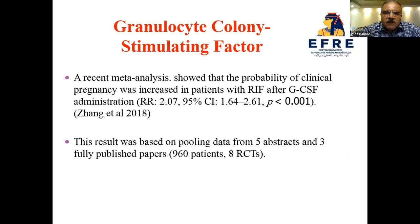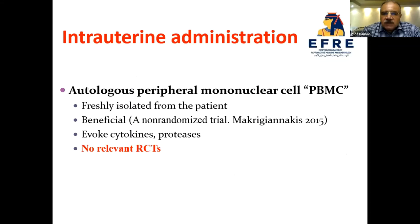Regarding granulocyte colony-stimulating factor (G-CSF), a recent meta-analysis showed that the probability of clinical pregnancy was increased in RIF patients after its administration, based on pooling data from five abstracts and three fully published papers. Regarding intrauterine administration of autologous peripheral mononuclear cells, freshly isolated from the patient, it may be beneficial — a randomized controlled trial in 2015 showed it evokes cytokine and protease responses — however no further relevant randomized controlled trials have been found.